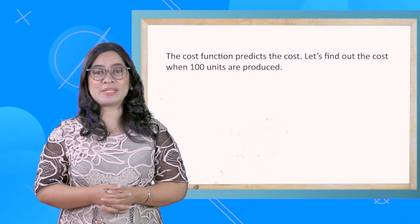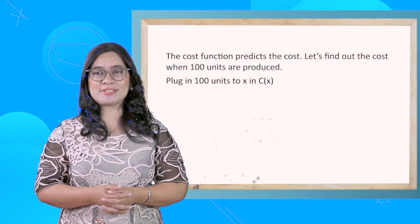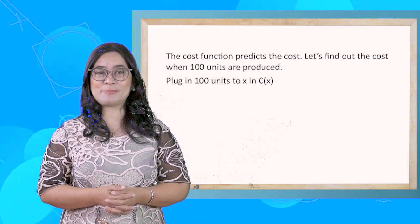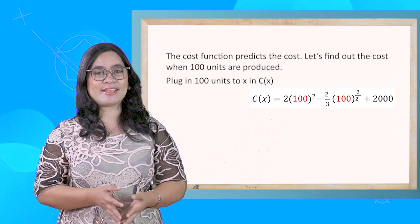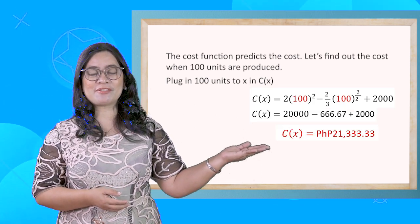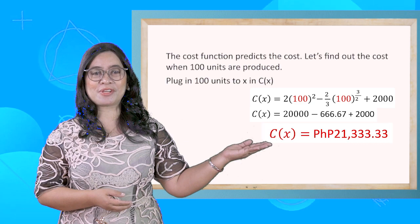The cost function predicts the cost. Let's find out the cost when 100 units are produced. Plug in 100 units to x in C(x), and it yields 21,333.33 pesos.